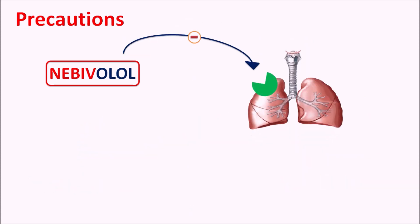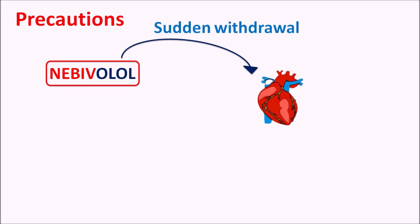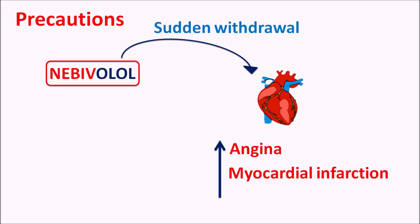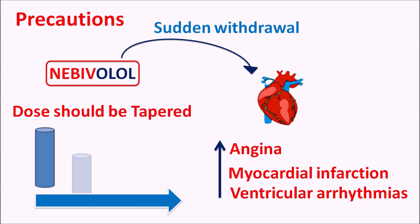Similarly, nebivolol can block the beta 2 receptors located on the respiratory system. Normally beta 2 receptors are responsible for bronchodilation, but when they are blocked it can result in bronchospasm. So in patients with any bronchospasm, nebivolol should be carefully given. Similarly, on sudden withdrawal this drug can impair cardiac function, resulting in increased risk of angina, myocardial infarction, or even ventricular arrhythmias. So this drug should not be stopped suddenly; the dose should be tapered very slowly over 1 to 2 weeks to minimize the risk of angina, myocardial infarction, or development of arrhythmias.